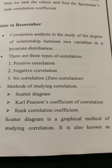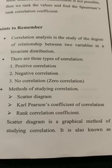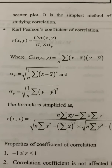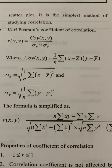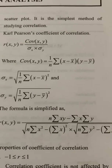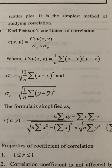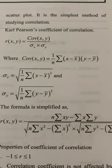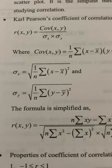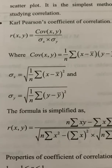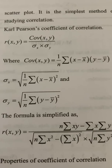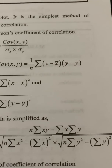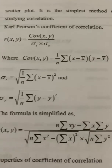The formula for correlation is: R(xy) is equal to covariance of XY divided by Sigma X into Sigma Y. We can write covariance of XY divided by standard deviation of X into standard deviation of Y. The covariance formula is 1 by n, sigma of (x minus x-bar) into (y minus y-bar).